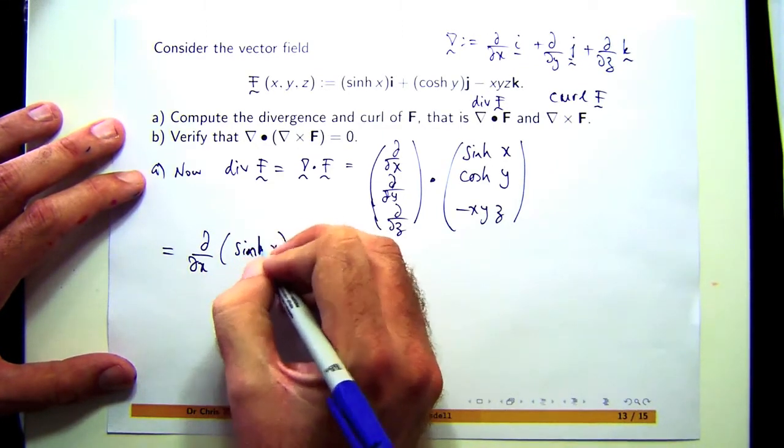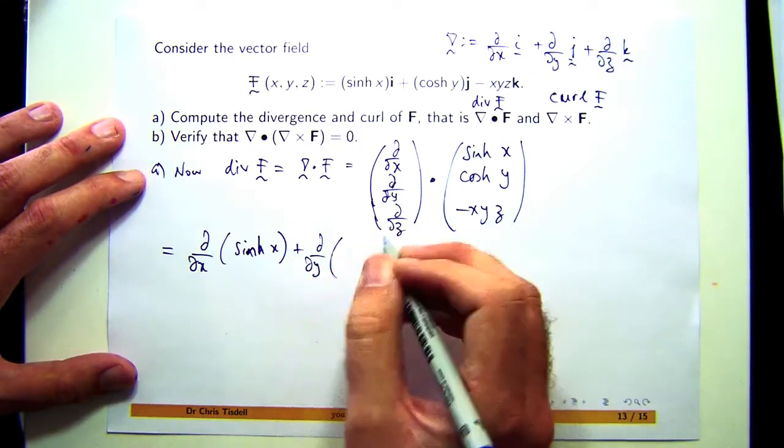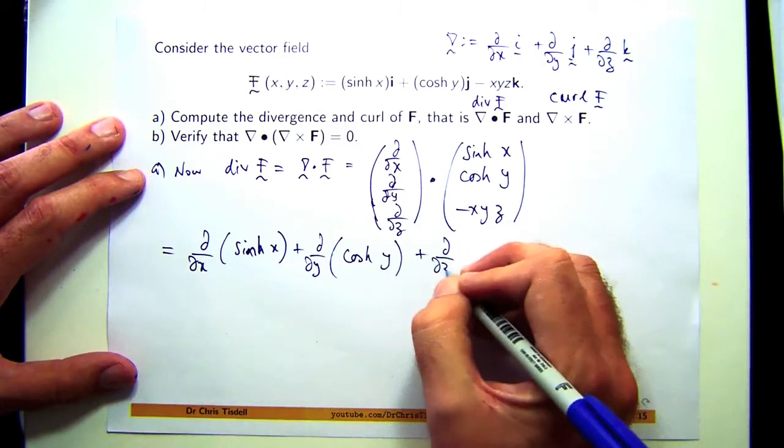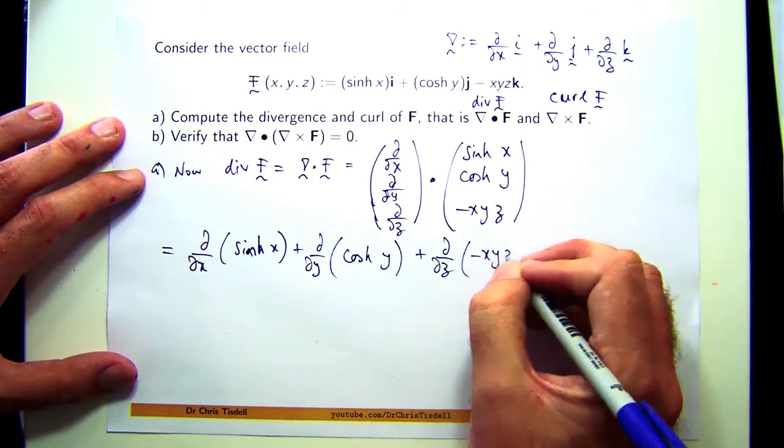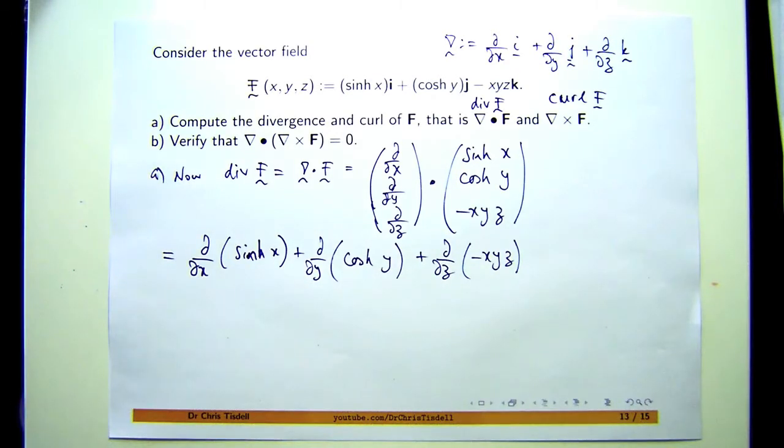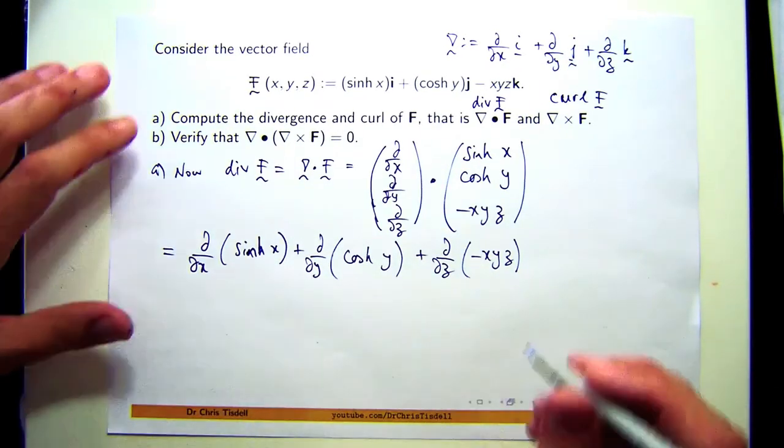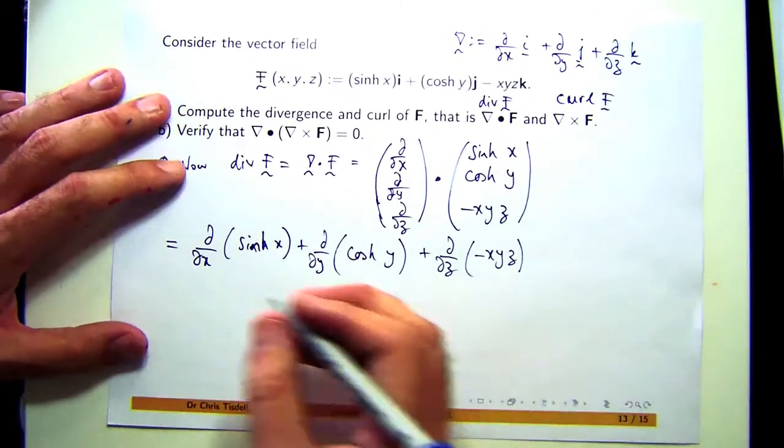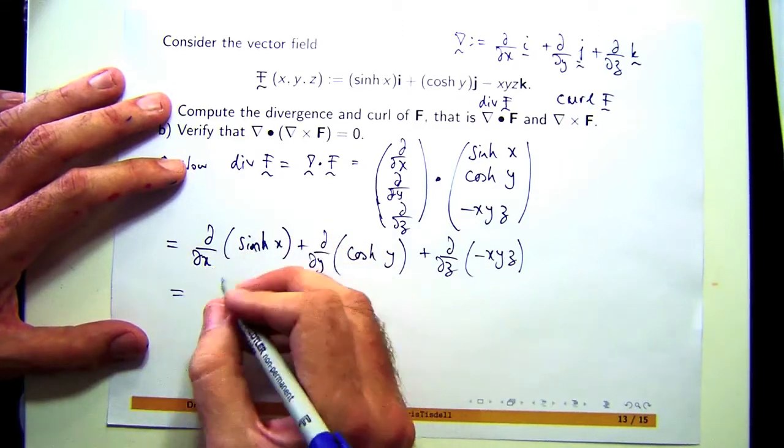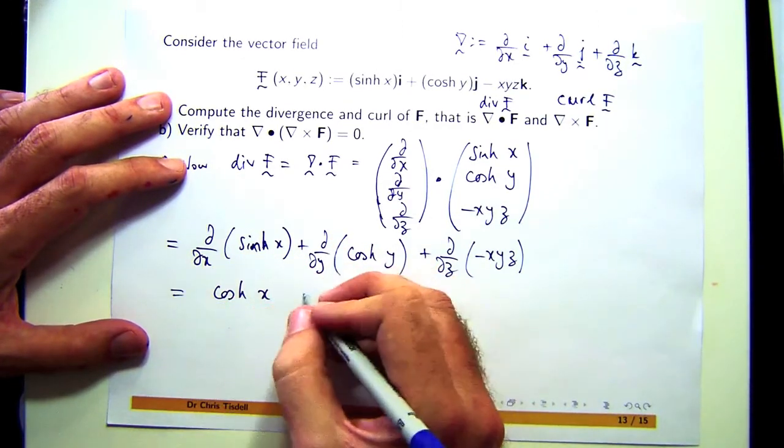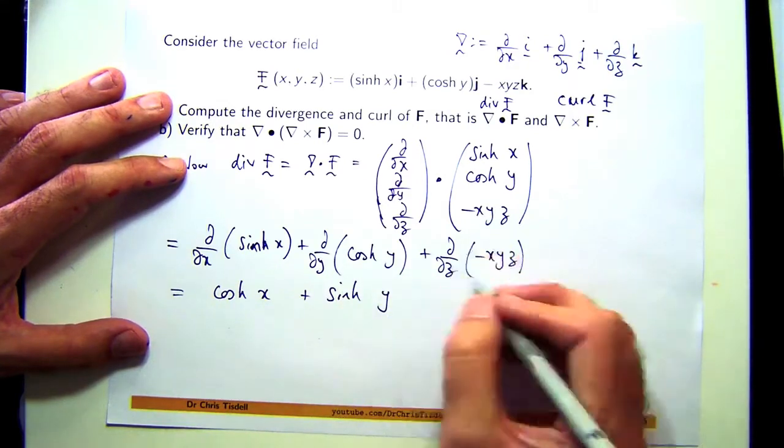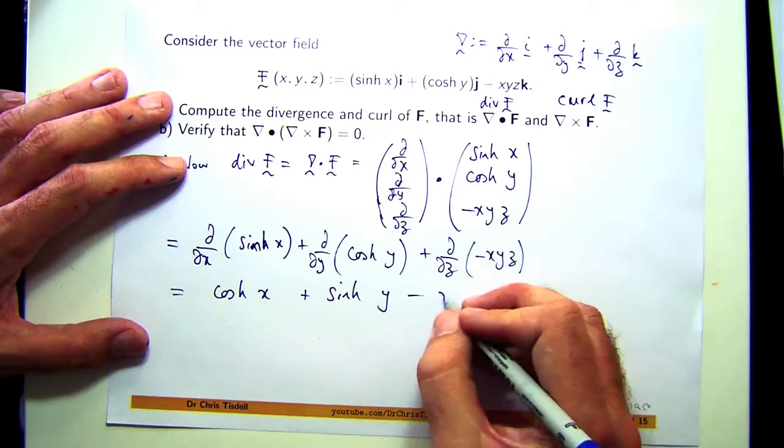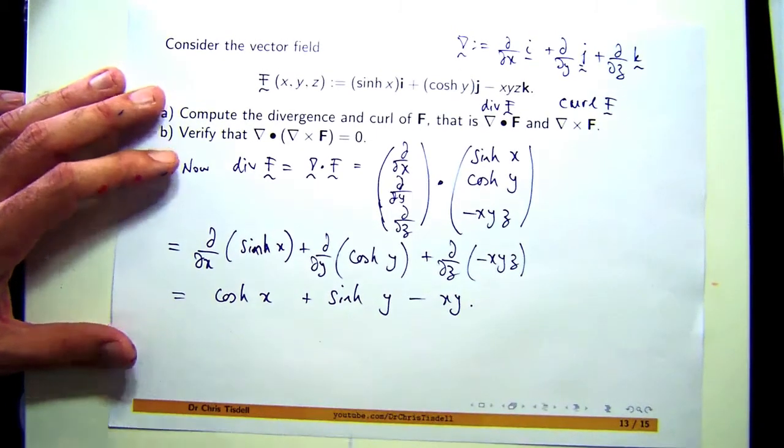Let me write that out and I'll show you what I mean. So this is sinh, not sinh x. It looks a bit crazy but actually it's pretty easy to compute. Derivative of sinh is cosh, and derivative of cosh is sinh. If you differentiate this, you'll get cosh x plus sinh y. And derivative of this with respect to z, you'll get negative xy.